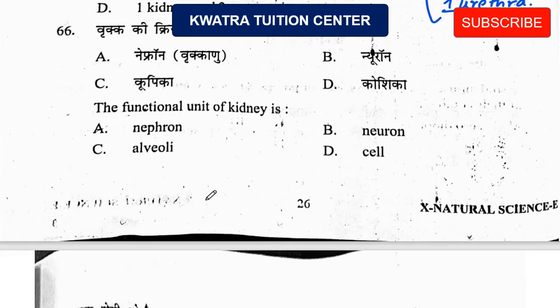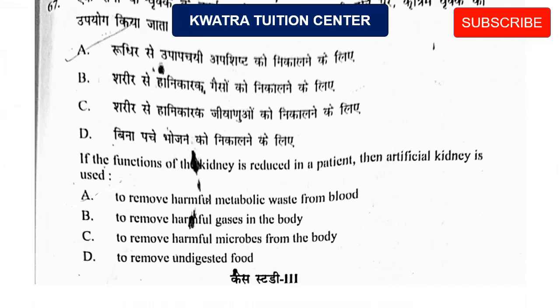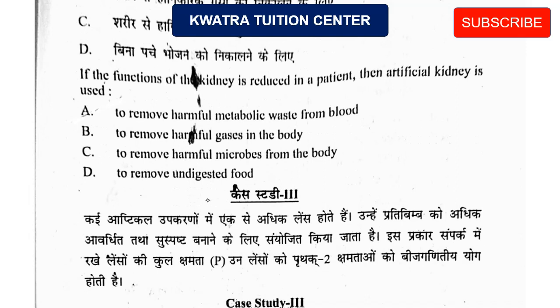Question 66: The functional unit of the kidney is the nephron — this is a very common one-mark question. Next, if the function of the kidney is reduced in a patient, an artificial kidney is used, because the kidney's job is to remove harmful metabolic waste from the blood. If the blood is not purified, the patient may die, so an artificial kidney is essential.